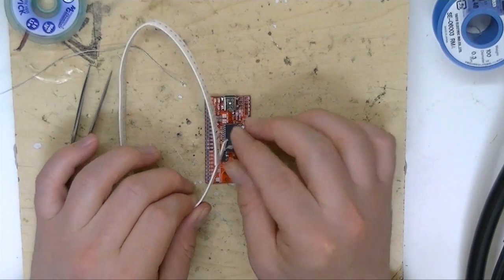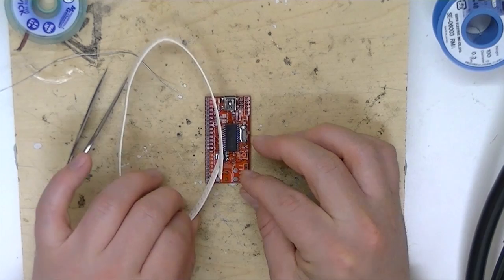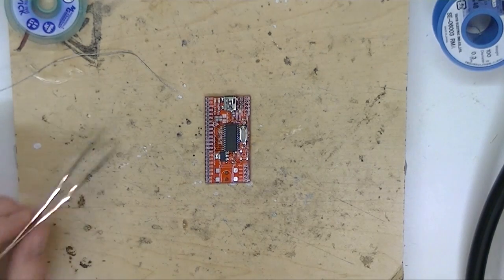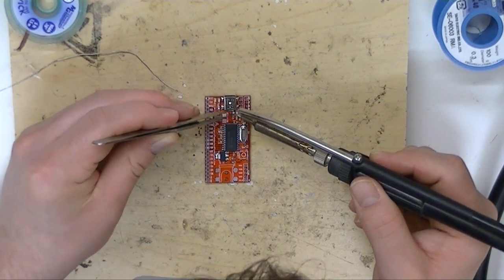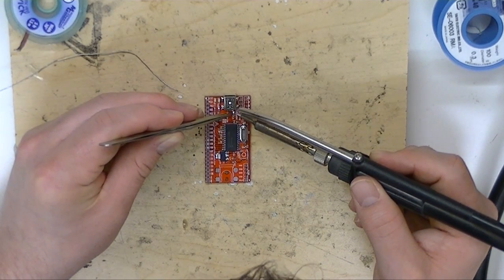And finally the ferrite bead. I think this pad is actually for an 0805 size bead. But we can fit an 0603 in there just fine too.